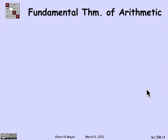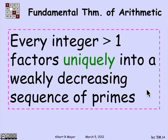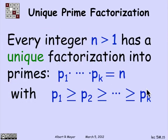Now we're ready to prove what's called the fundamental theorem of arithmetic, which says that every integer greater than 1 factors uniquely into a weakly decreasing sequence of primes. The statement of weakly decreasing is a bit technical. What we want to say is that a number factors into the same set of primes — but that's not quite right, because a set doesn't account for how many times each prime occurs. A slick way to handle that is to take all the prime factors, including multiple occurrences, and line them up in weakly decreasing order. That sequence is unique.